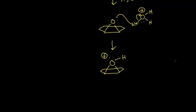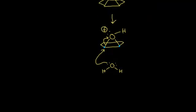Just like the cyclic halonium ion, you get partial carbocation character at the two carbons of the ring. The resonance hybrid gives these carbons some partial positive character. When water comes along as a nucleophile, the lone pair of electrons on water is attracted to those partially positive carbons. So you get nucleophilic attack — the lone pair of electrons attacks one of the carbons, which kicks the electrons in that bond off onto the oxygen. Let's draw the result of attack on the carbon on the left.